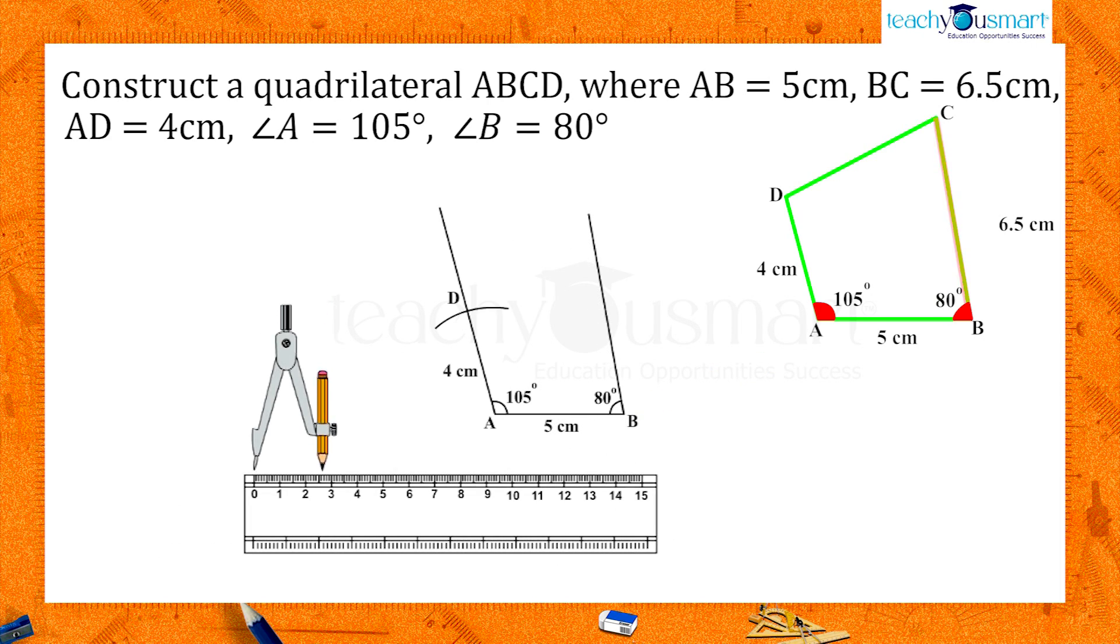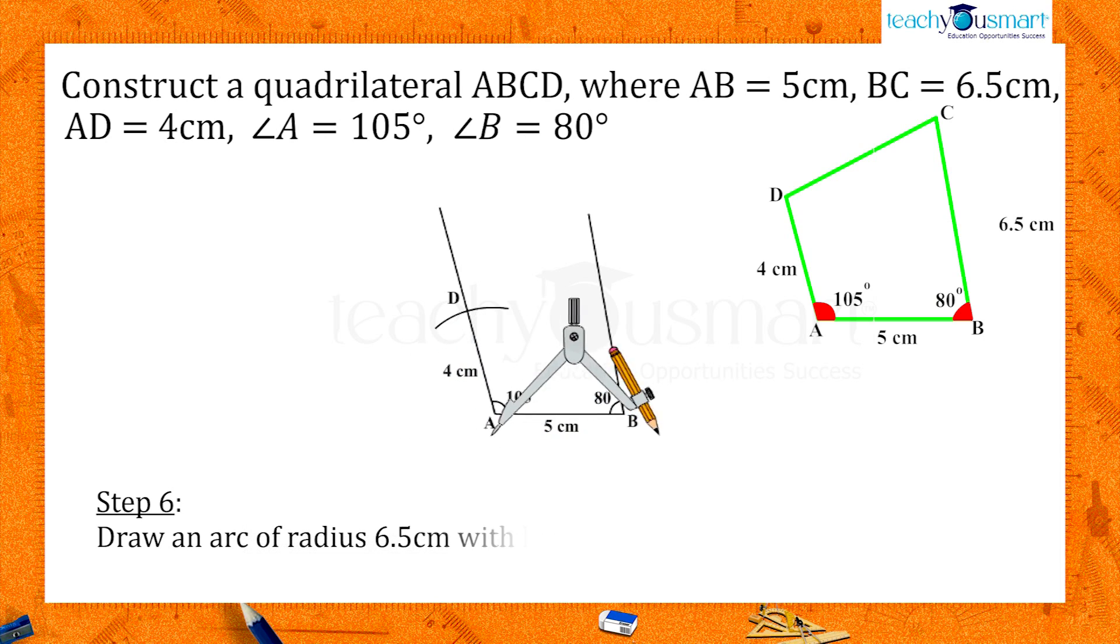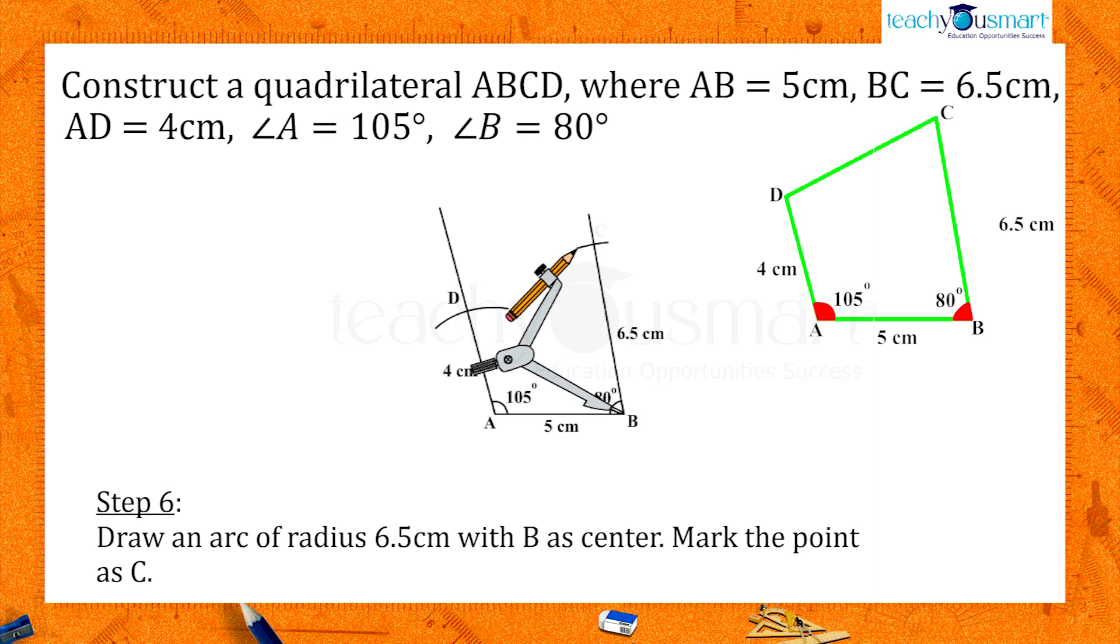C is at a distance of 6.5 centimeters away from B on this line. With B as the center, draw an arc of radius 6.5 centimeters and cut this arm to get the point C.